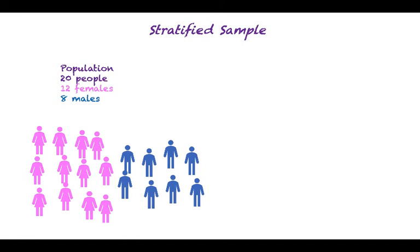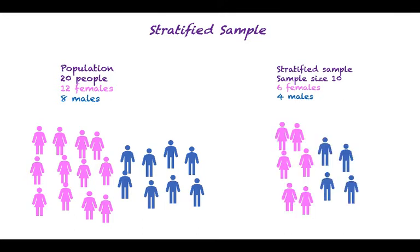In this example we have a population size of 20 people. 12 are females and 8 are males. If we choose a stratified sample of size 10, we will need 6 females and 4 males. This will keep the same proportions in our sample as we had in the population.